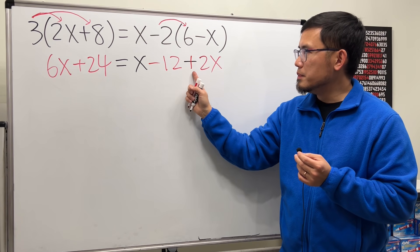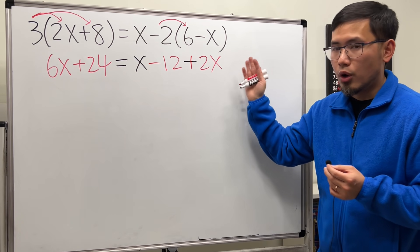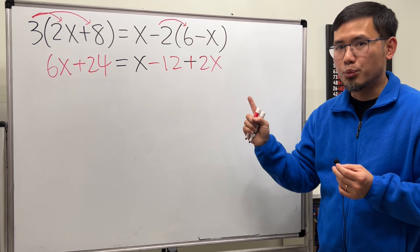This right here is a very common mistake. Remember negative times negative, we have to change the sign. So always distribute first. That's step 1.